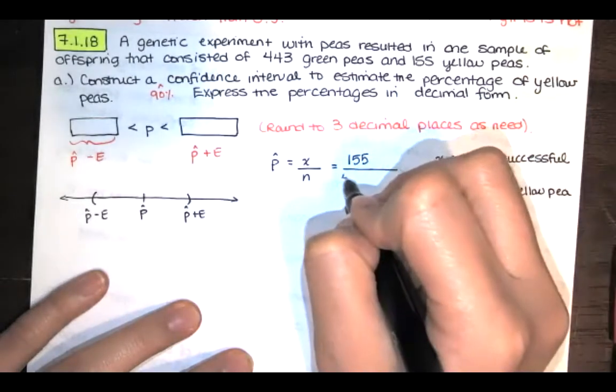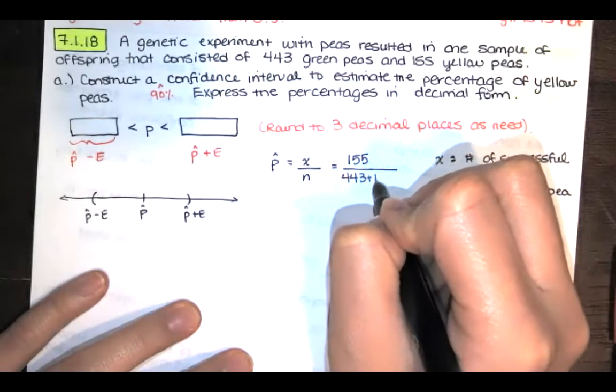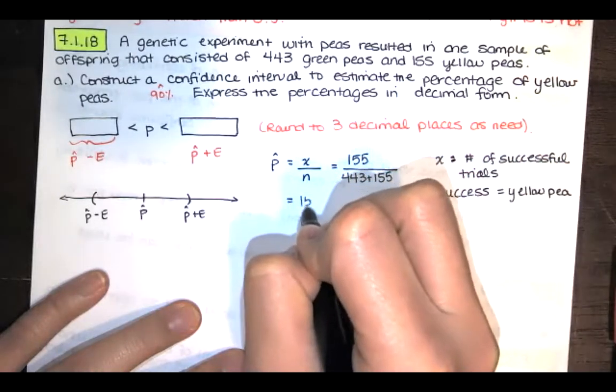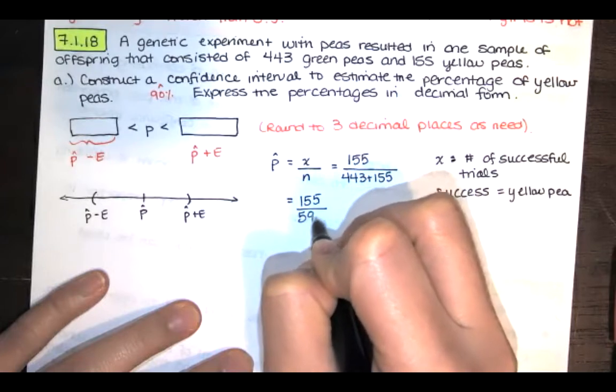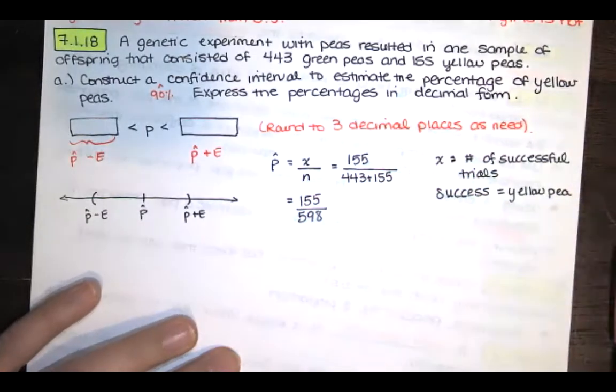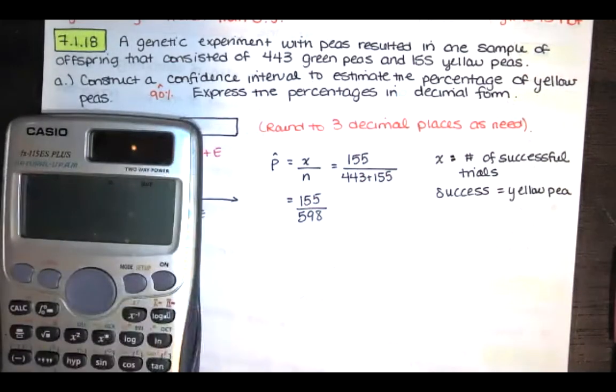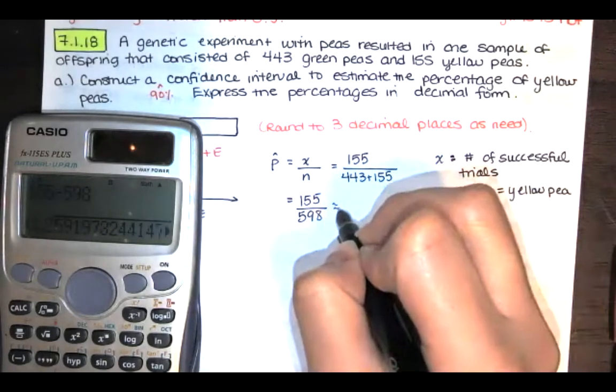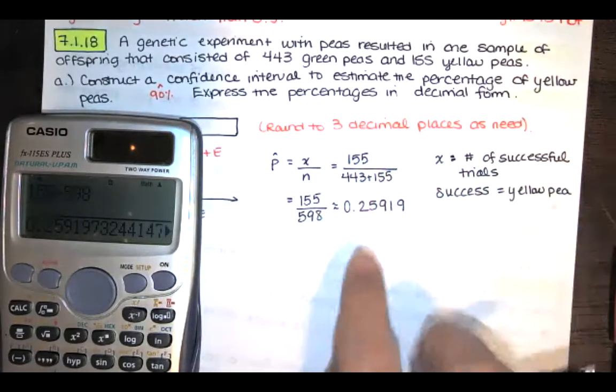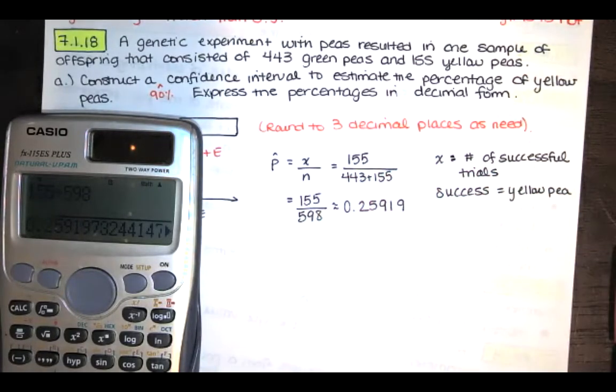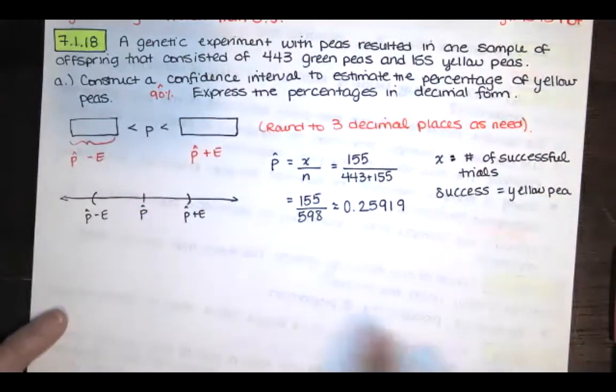The sample size is 443 plus 155. So we get 155 over 598. That's approximately 0.25919. I'm going to round out to the fifth decimal place because we're going to add and subtract the error. I'll round at the very end to three decimal places for both of these.